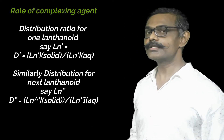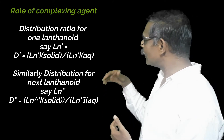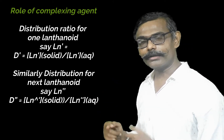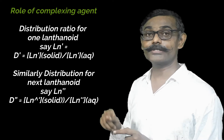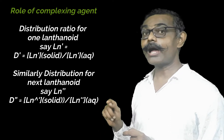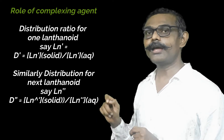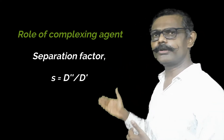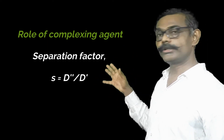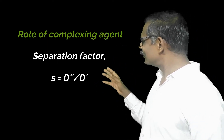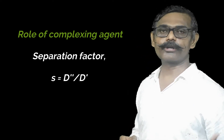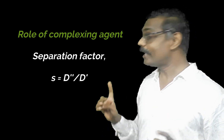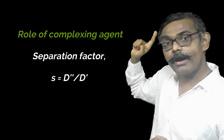For one lanthanoid Ln', the distribution ratio d' = [Ln'] solid / [Ln'] aqueous. For another lanthanoid Ln'', d'' = [Ln''] solid / [Ln''] aqueous. The separation factor S = d'' / d'. It is found that this separation factor is nearly equal to 1, meaning effective separation is not possible. We need to depart S from 1, so we add a complexing equilibrium.